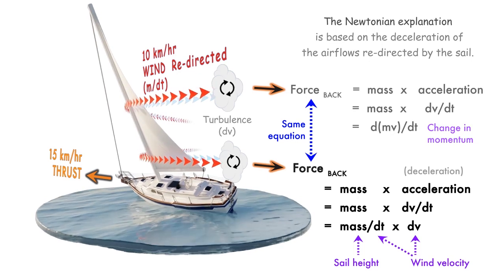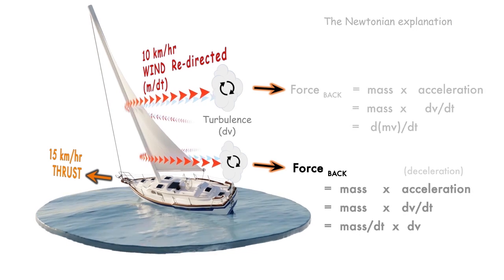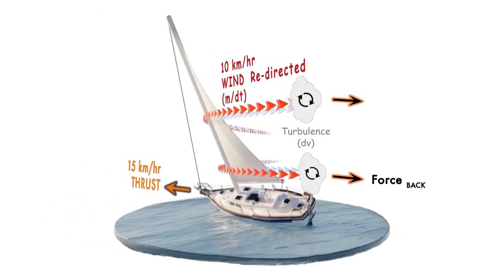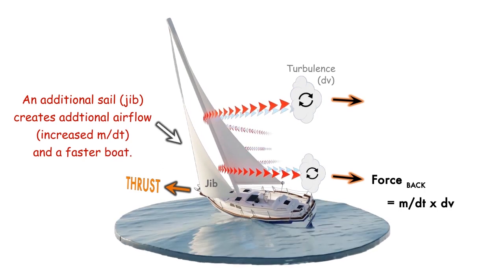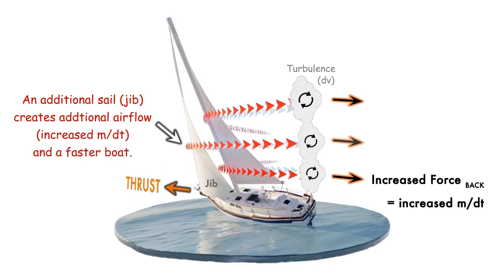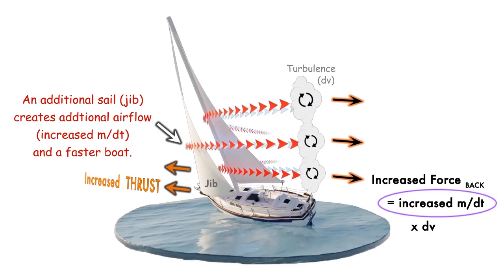The Newtonian approach can then be applied to explain all aspects of sailing. For example, an additional sail, such as a jib, creates additional air flows, and therefore, additional forward thrust, which causes the boat speed to increase.